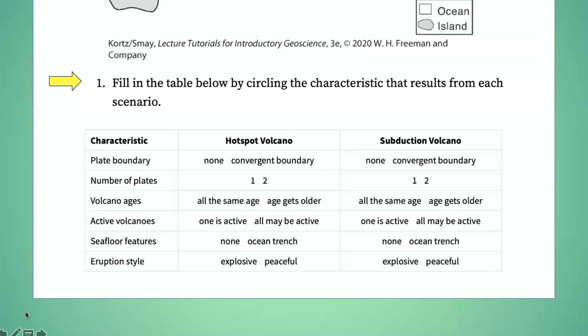A hot spot volcano is not at a plate boundary. Now, there's some exceptions like Iceland, but that's a divergent plate boundary. Subduction zones by definition are convergent boundaries.